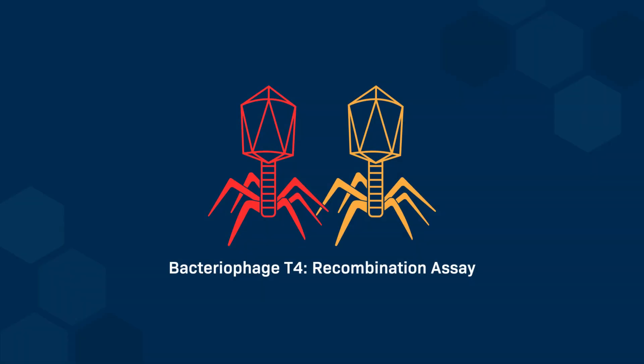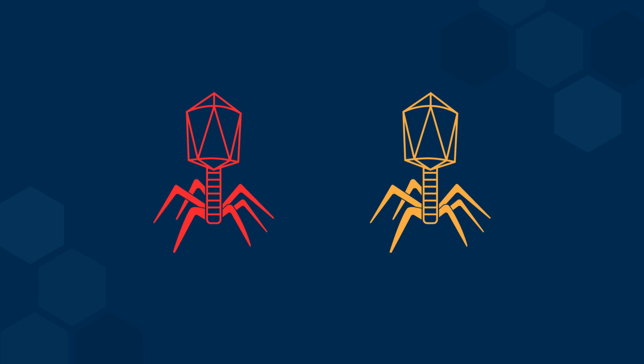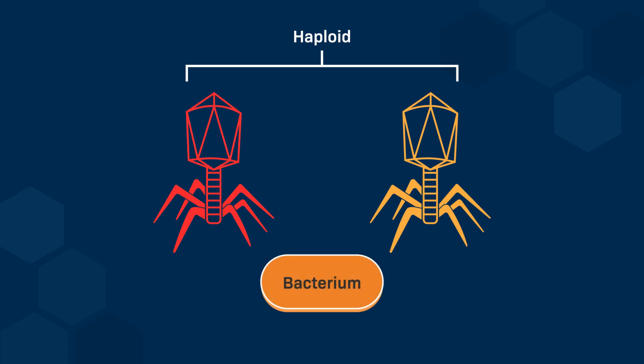In this video, we will discuss recombination assays in bacteriophages. One characteristic of any recombination assay is the need for two copies of the genome to allow recombination. This is easy to do when both genomes are diploid. But how is it done with bacteriophages? Each bacteriophage contains only a single copy of its genome, and bacteriophages are haploid. The experimental condition would need to be chosen such that one bacterium would be infected by two bacteriophages.